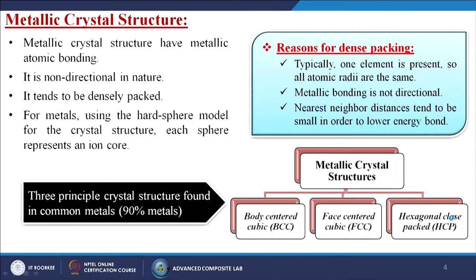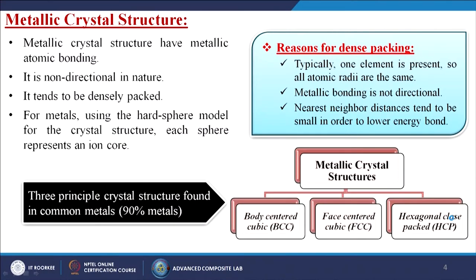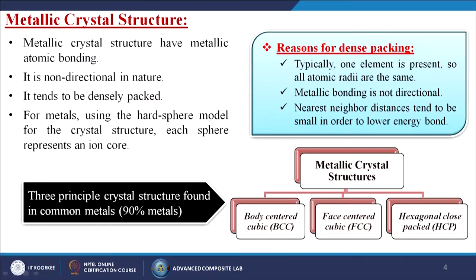The metallic crystal structure has metallic atomic bonding, so it is non-directional in nature and tends to be very densely or closely packed — the gap between atoms is very small. For metals, we use the hard sphere model, where each sphere represents an atom core. The reasons for dense packing are: generally one element is present, all atomic radii are the same, metallic bonding is non-directional, and nearest-neighbour distances tend to be small to lower bond energy. There are mainly three principal crystal structures found in about 90% of metals: BCC, FCC, and HCP.